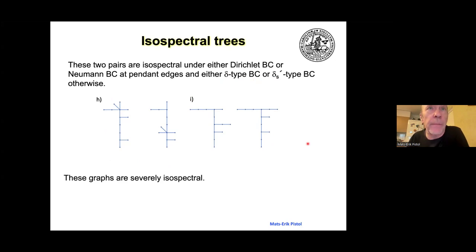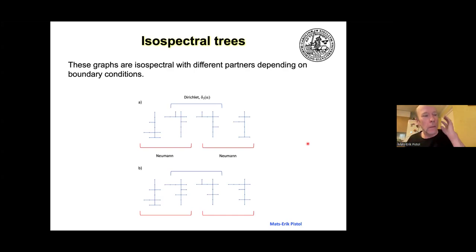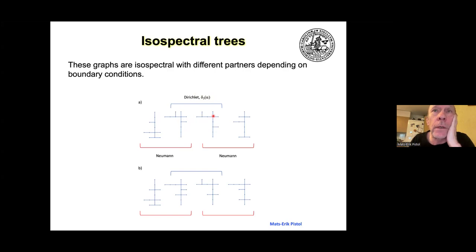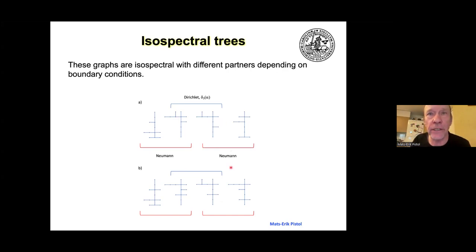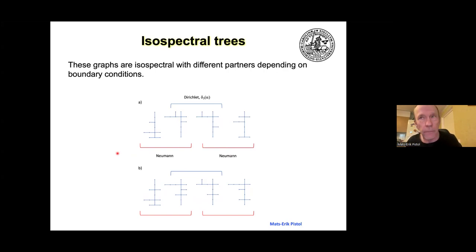But there are exceptions. These two graphs are isospectral with Dirichlet boundary conditions at the pendant edges and delta-type boundary conditions at degree-3 vertices, using Neumann at some others. But if we change to Neumann boundary conditions at all vertices, then this graph has a different graph as its isospectral partner. And here we have another set of four graphs where the isospectral partner depends on the boundary condition, which shows many other things can happen — making it difficult to find general results.